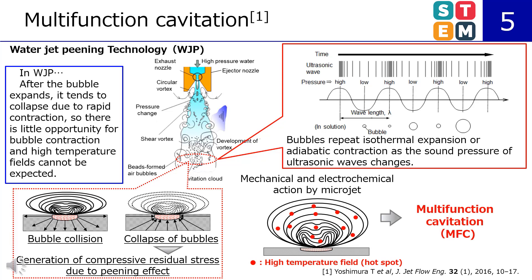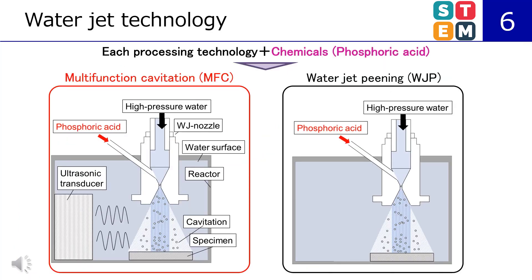We call this technology multifunction cavitation. In this study, phosphoric acid was added to WJP and MFC, and cavitation was generated with a liquid mixture of water and phosphoric acid to process the magnesium surface. The left side shows MFC technology and the right side shows WJP technology. We will introduce the technology of adding chemical properties to MFC and WJP to impart corrosion resistance to the magnesium alloy surface.